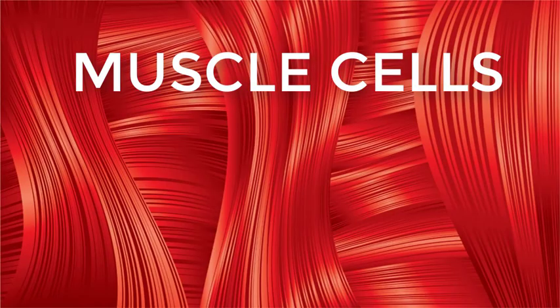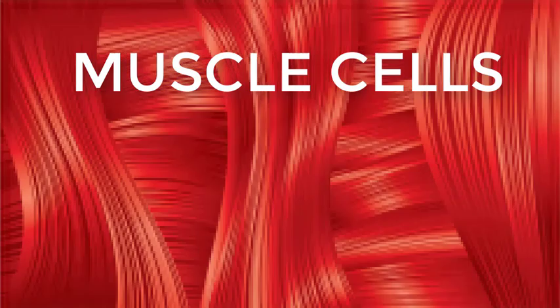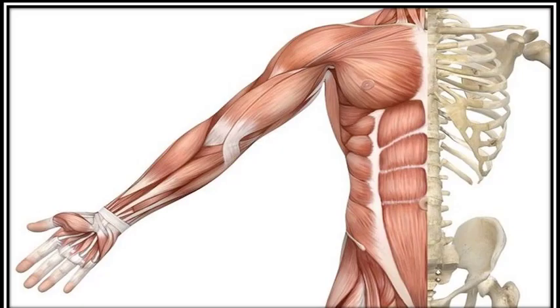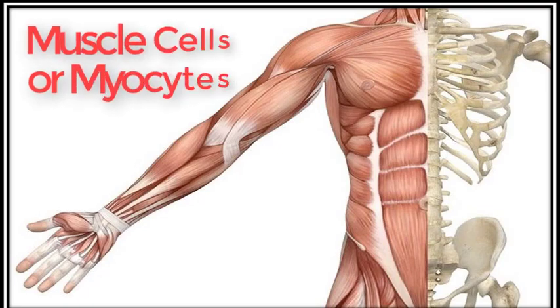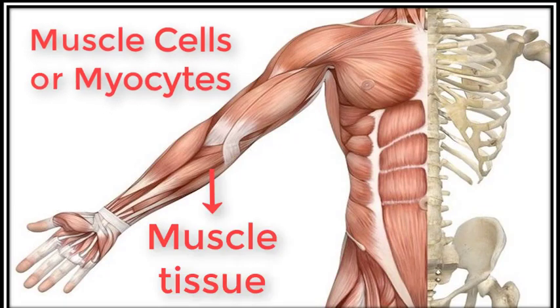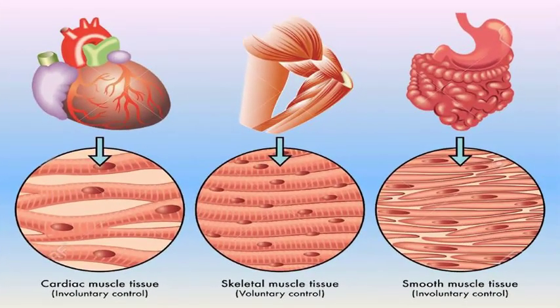This video is dedicated to muscle cells. Muscle cells, technically known as myocytes, are the cells that make up your muscle tissue. Muscles are found all throughout the body and are a crucial part of many systems. There are three basic types of muscles: the skeletal, the smooth, and the cardiac muscle cells. All three types have different characteristics and features and all perform different functions.